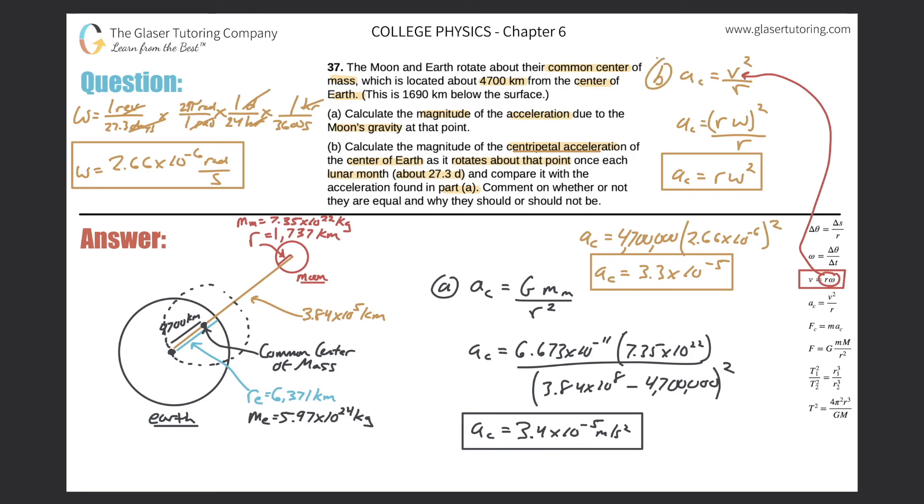And now what else? They comment on whether or not they are equal and why they should or shouldn't be. Well, if you look at the numbers here, comparing this answer to this answer, you'll say they're not equal. But yes, they are not. It is evident. But most likely this is probably an approximation here. What's the chance that it's exactly 4,700 kilometers from the center of the earth? I doubt it is. So they're just giving us a nice number here. They should be the same. They definitely should be the same.